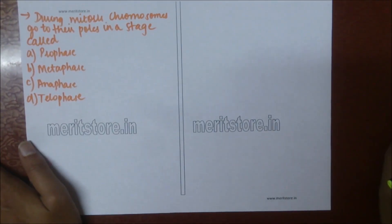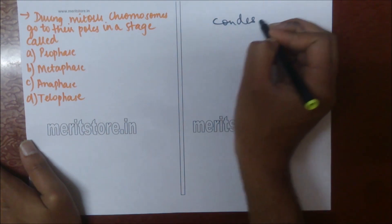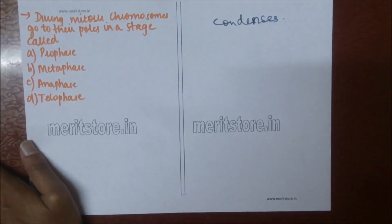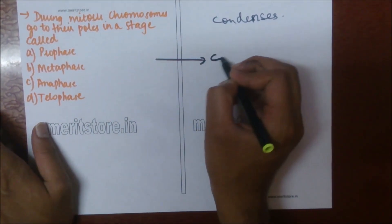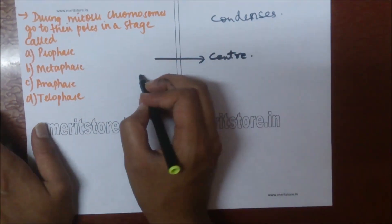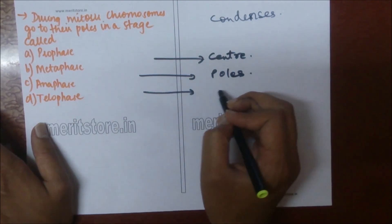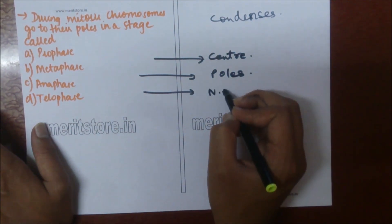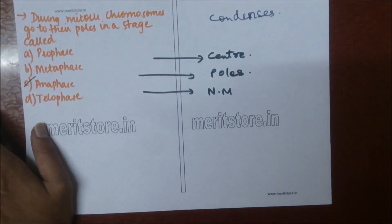During mitosis, chromosomes go to their poles in the stage called: A) prophase, B) metaphase, C) anaphase, D) telophase. Chromosomes condense in prophase. In metaphase they arrange at the center or equatorial plane. In anaphase they move to their respective poles. In telophase they form two nuclear membranes and division occurs. So option C, anaphase, is the correct answer.